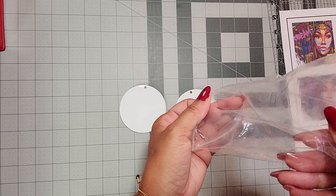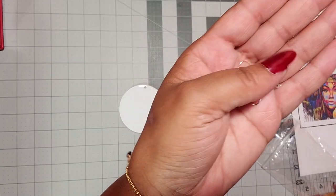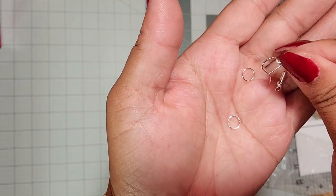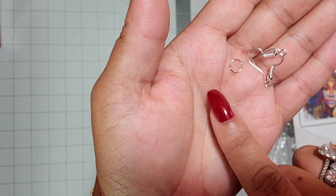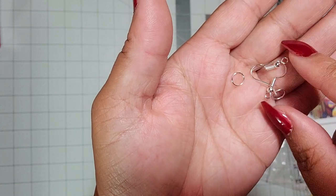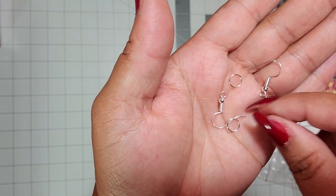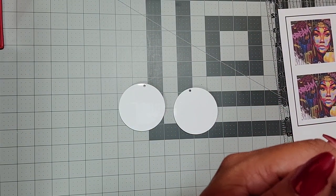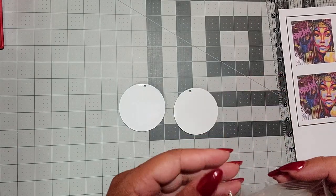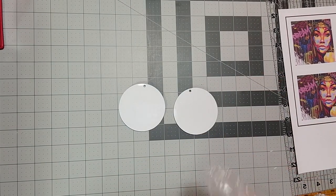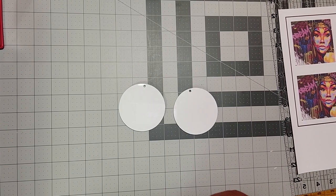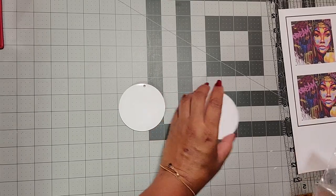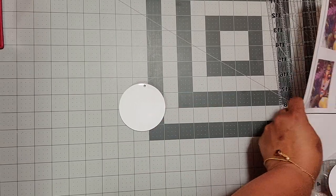These are three inch round sublimation blank earrings, and she includes the fish hooks and the jump rings. So everything that you need as far as the hardware goes is right here for you. And she's very reasonable. Her sublimation blanks run from one and a half to three inches in size, and they run from $1.25 to $2 a pair. So I think that is very reasonable.